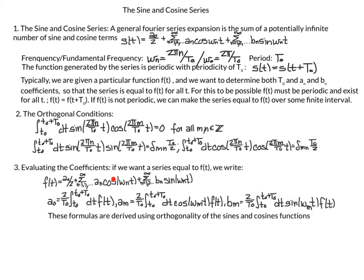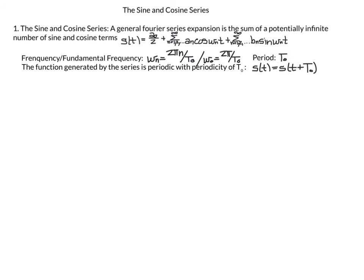This is our Fourier series. The formula for a_0 is given here. The formula for the m-th coefficient of the cosines is given here, and the formula for the m-th coefficient of the sines is b_m. That concludes our overview, so we're going to go back and talk in more detail about sine and cosine series in general.